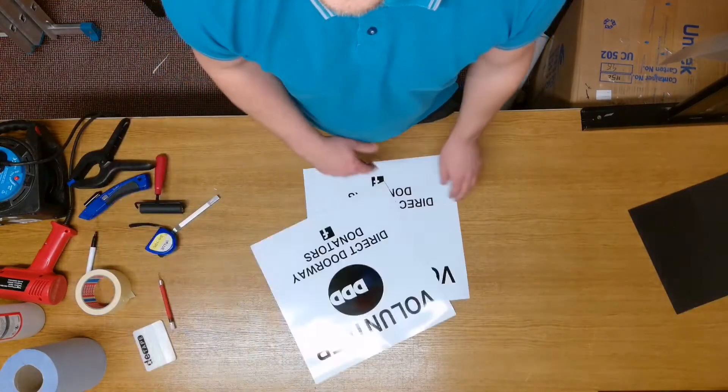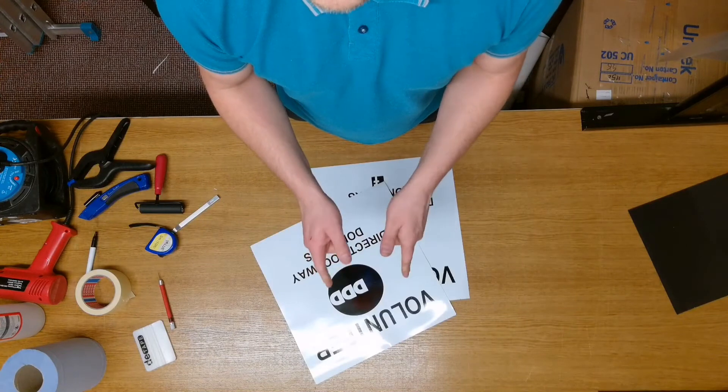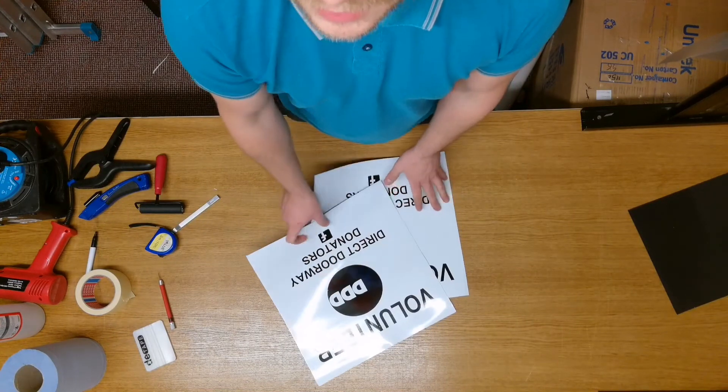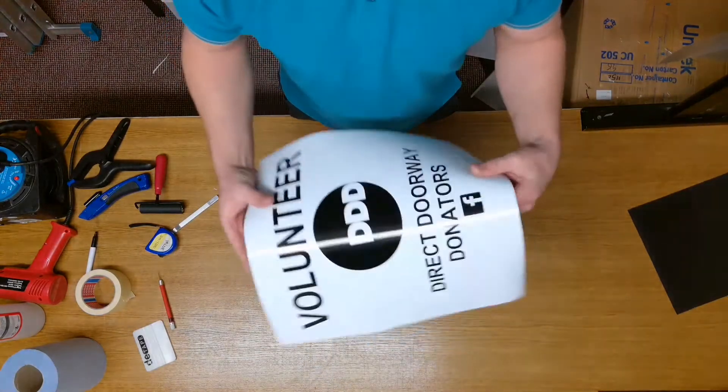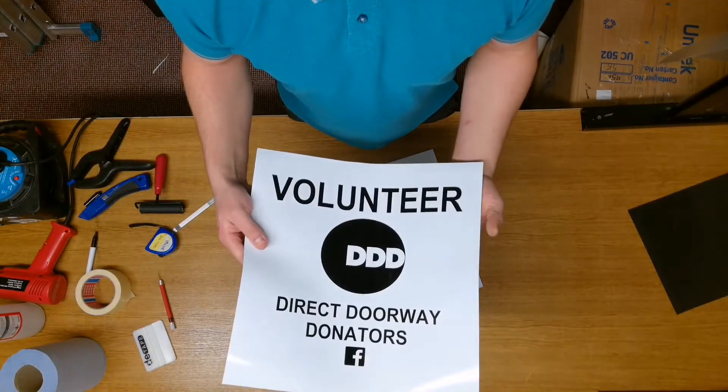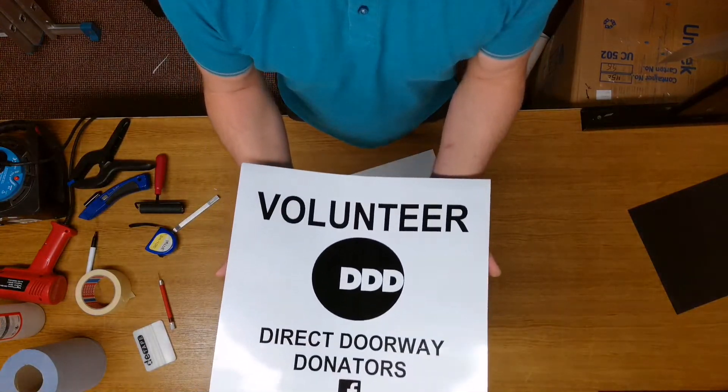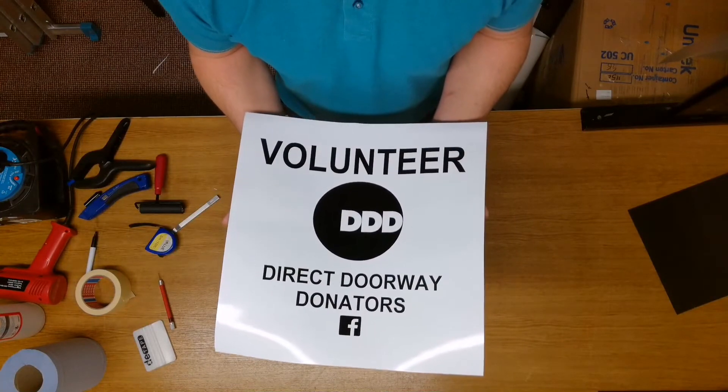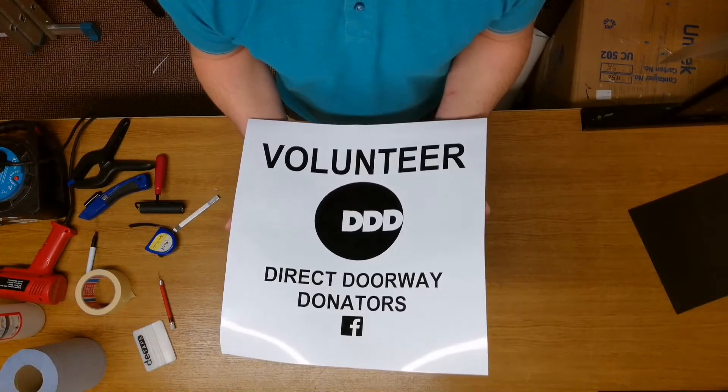So there we go. All done. Two lots of magnets ready to go on their vehicle. Good luck people. And if you do have any donations or anything that you feel that you can give, or even spend some time to go down and serve food, then contact these people and they will steer you in the right direction.